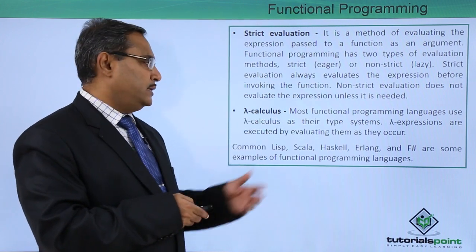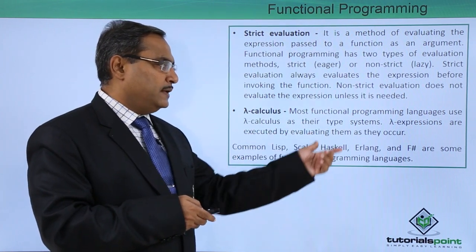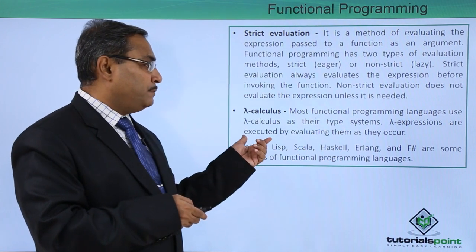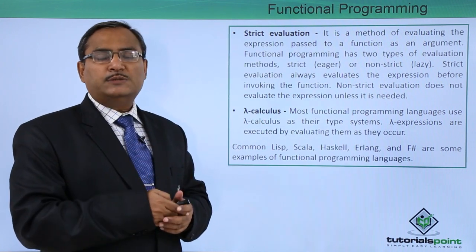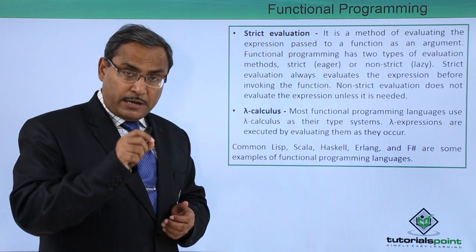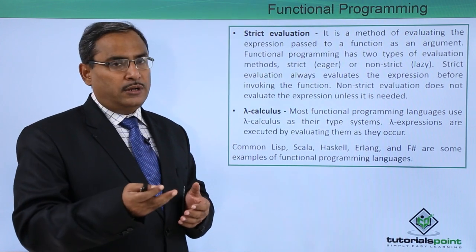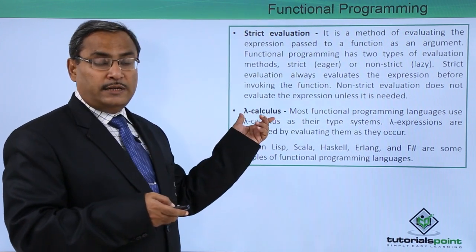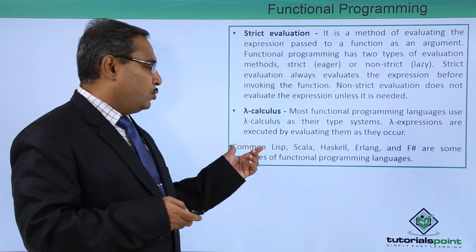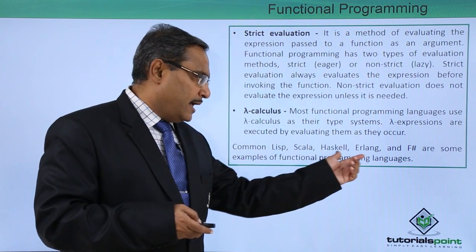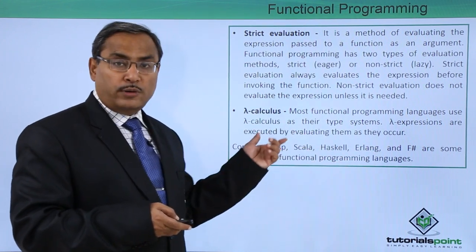Next is lambda calculus. Most functional programming languages use lambda calculus as their type systems. Lambda expressions are executed by evaluating them as they occur. In lambda calculus, we do not write the respective function name; depending upon the parameters passed — the number of parameters and their types — the respective function is called. This is lambda calculus, where we have anonymous function calling. Common Lisp, Scala, Haskell, Erlang, and F# are some examples of functional programming languages.